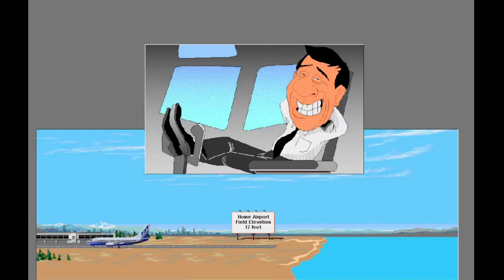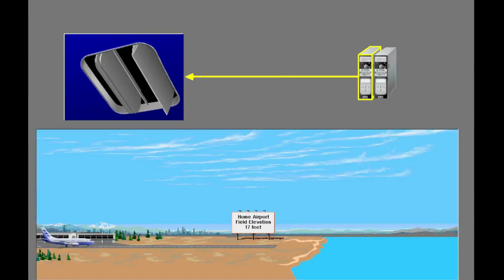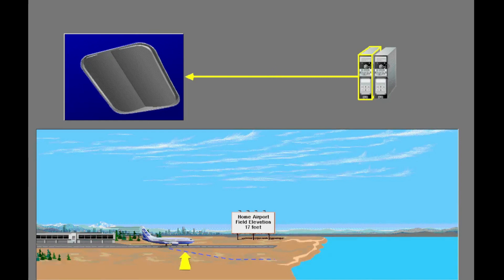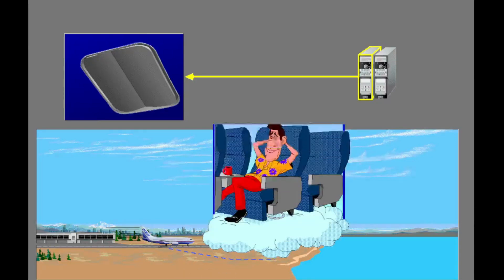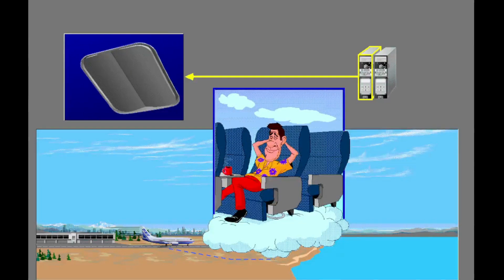The pressurization system is now set for flight. While parked on the ground and during taxi with low engine thrust, the pressure controller fully opens the outflow valve to depressurize the airplane. During the takeoff roll, the pressure controller starts to close the outflow valve. The cabin pressurizes to an altitude of 200 feet below the airport elevation. This decrease in cabin altitude improves system performance and increases passenger comfort during takeoff.